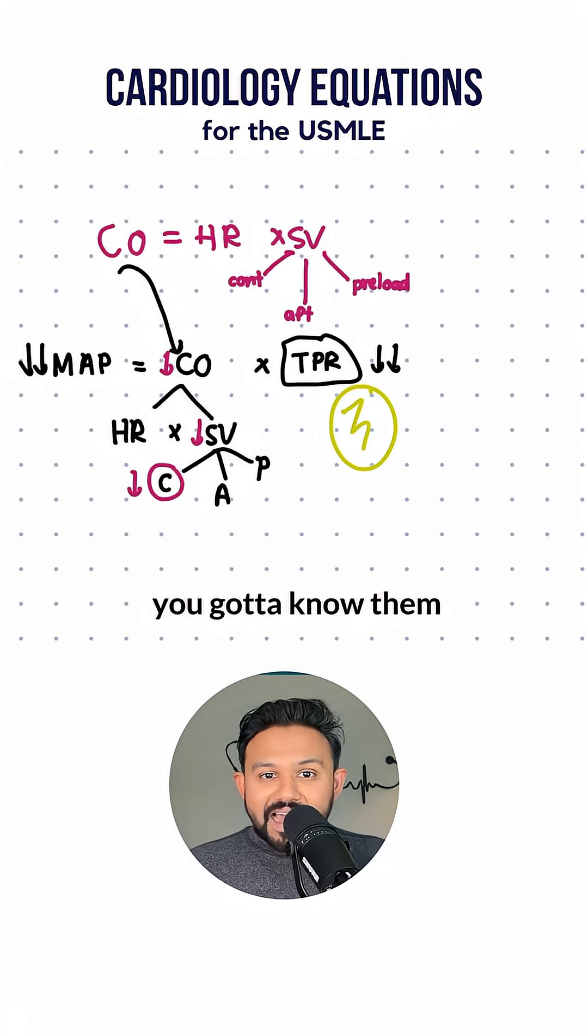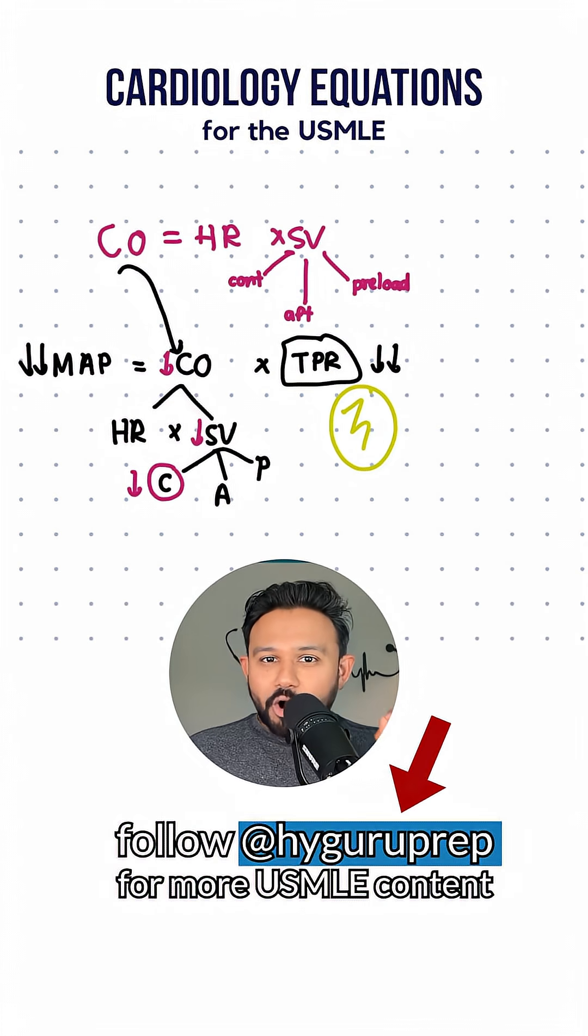So two equations, you got to know them, cardiac output and mean arterial pressure. Follow me for more high-yield USMLE content to help you think like the test maker.